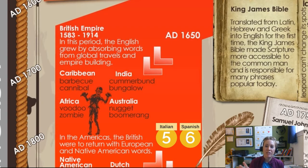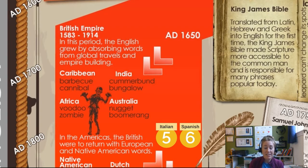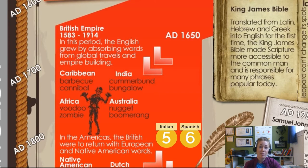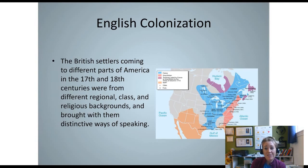As English became a more legitimate language and the English people began to govern themselves, one of their strategies was to start colonizing — heading out to the ends of the earth. You see a great expansion of the English Empire. These people going out to colonize were not only taking English with them, but occasionally borrowing terms from indigenous people in the places they settled. When the British came to North America in the 17th and 18th centuries, they brought the English language and we see the establishment of American English.